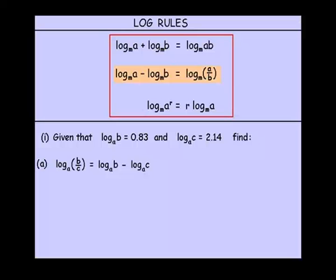Since log of B is 0.83, that's what we'll write, and we're subtracting the log of C, which is 2.14. So we're going to subtract that, and that simplifies to be negative 1.31.